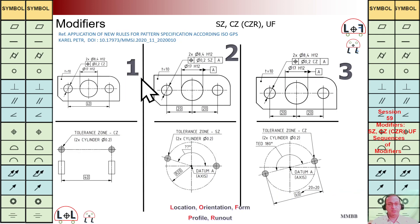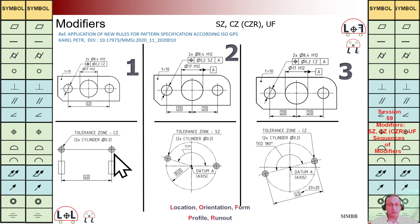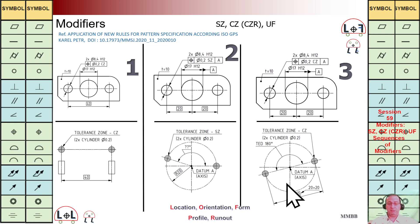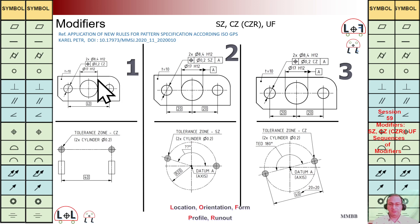In summary, all three examples are shown on one page so we can see the differences. When we have CZ, we get the constraint for both orientation and location — that is combined zone. If it is SZ, we do not have that constraint and the angle is no longer 180. But when combined with respect to datum A, the holes cannot go left and right, though they can still rotate — similar to this CZ example one.